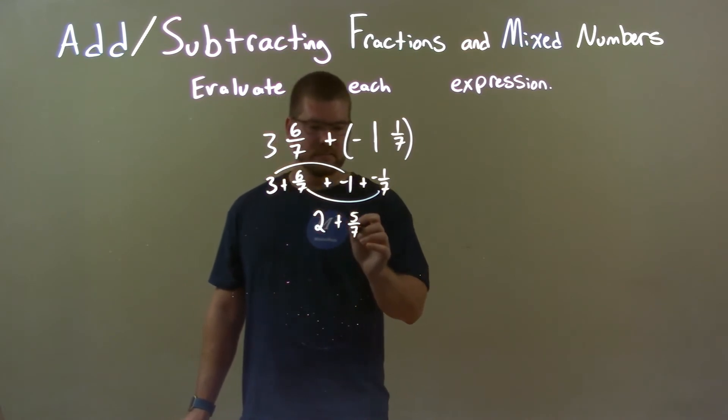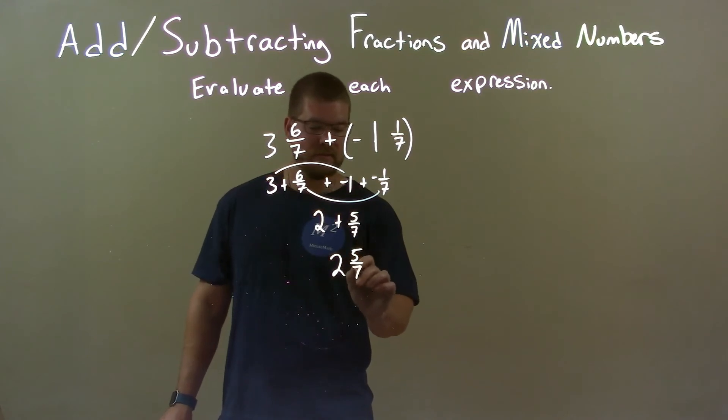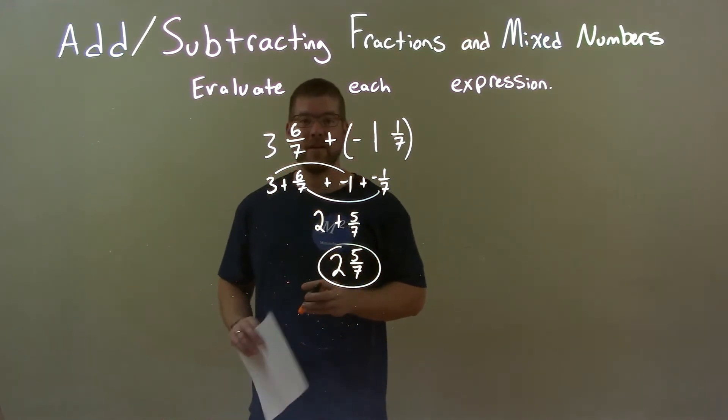Now we combine these two together, add them together, and make it 2 and 5/7. And there we have our final answer.